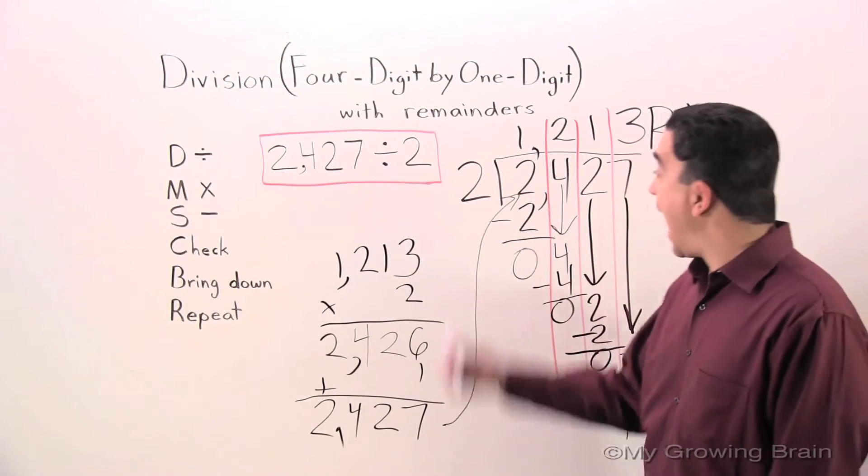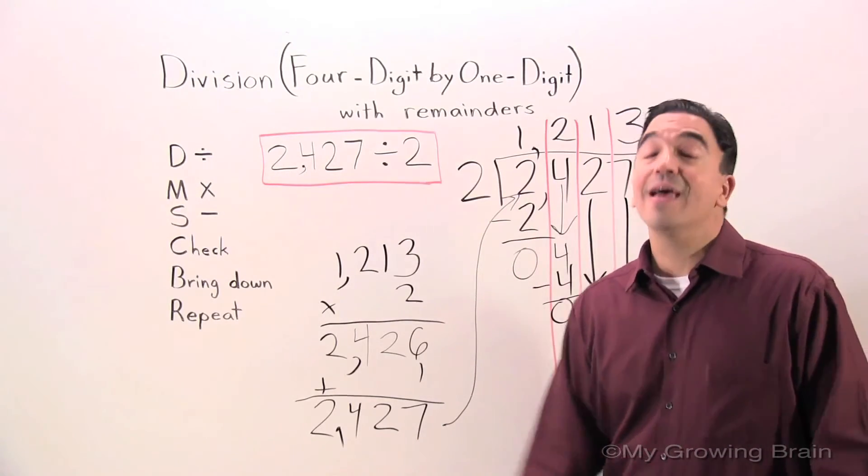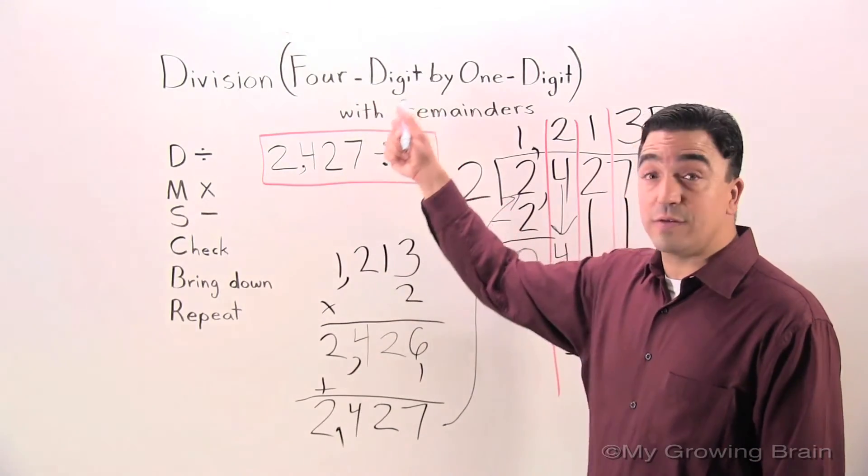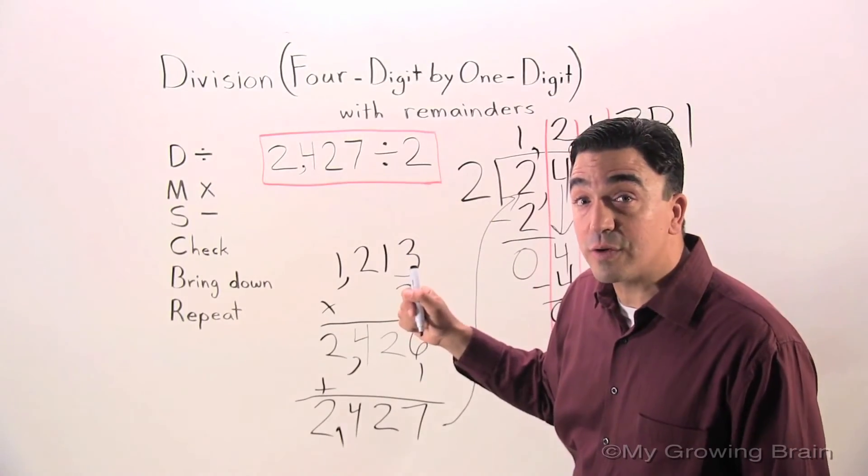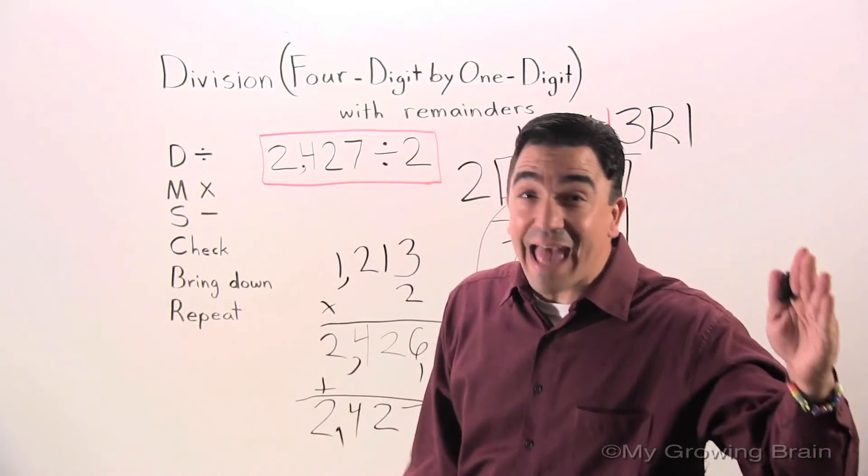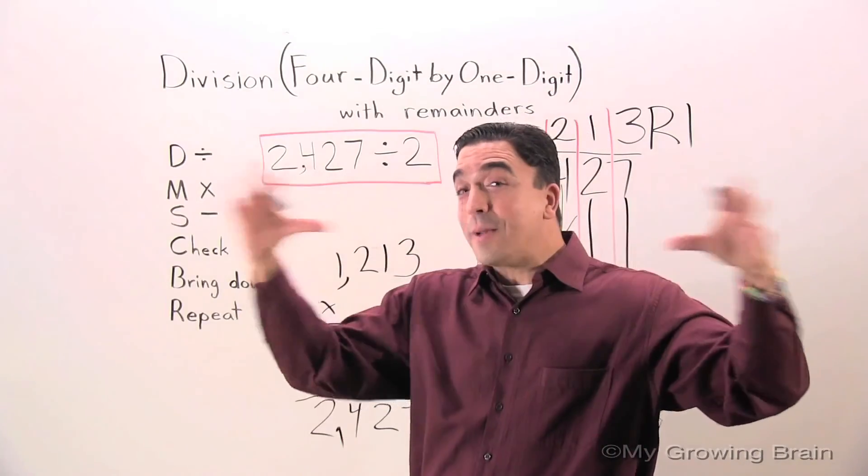The same as my dividend. That concludes our lesson on 4 digit by 1 digit with remainders. A division concept. Coach Mike signing out from my growing brain.